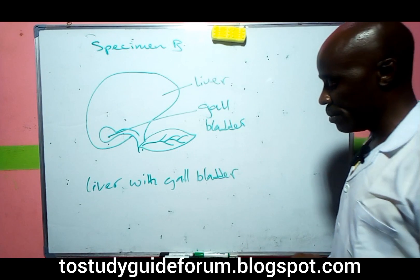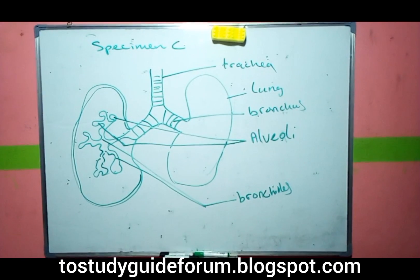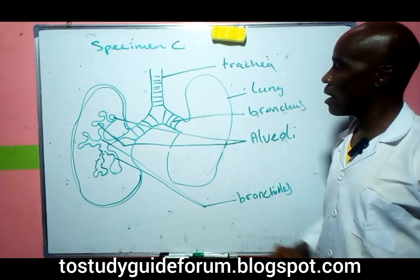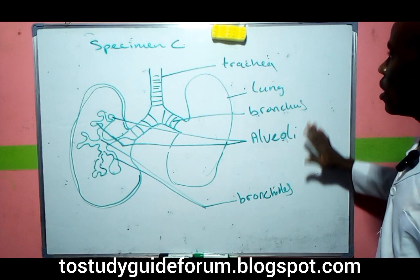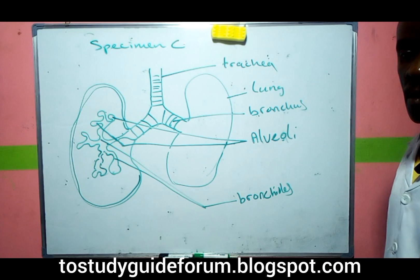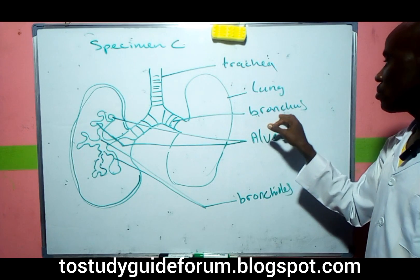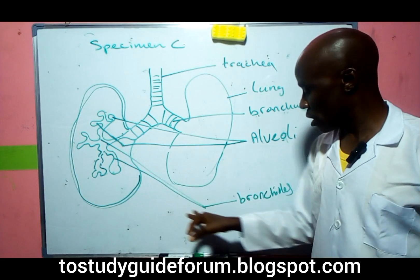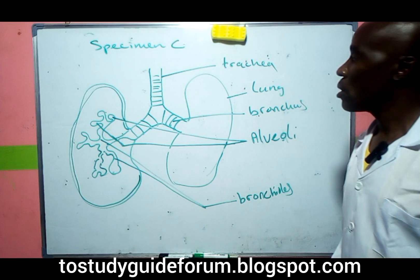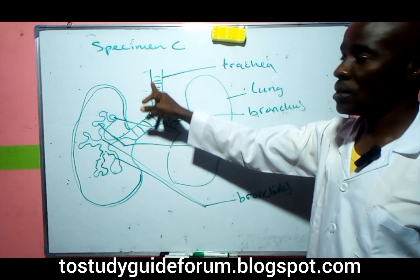Next, we look at Specimen C, which is the lungs. This is a diagram of the lungs giving information about its structure. We have the trachea, the bronchioles, the lungs, the alveoli, and the bronchi.